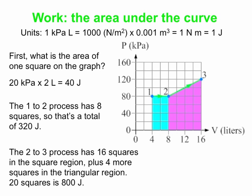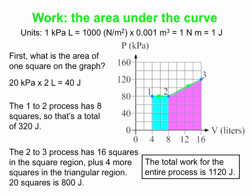20 times 40 gets us 800 joules. So 320 joules for the 1 to 2 process, 800 joules for the 2 to 3 process. If you want to know how much you have going from 1 to 2 and then on to 3, you just add them up. Total work in this case is 1,120 joules. I hope you figured that out yourself and got the right answer.